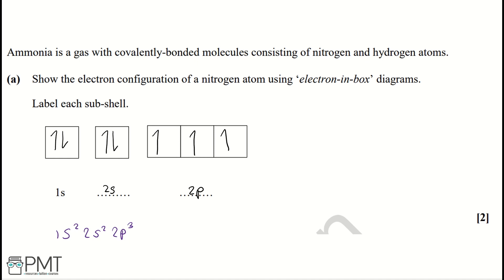How I've filled this is using Hund's rule. Hund's rule says it's more stable to fill each orbital with one electron than with two, as that limits repulsion. To get the two marks for this question, you get a mark for having the correct subshells (2s and 2p), and a mark for correctly filling your subshells with electrons.